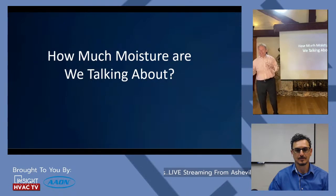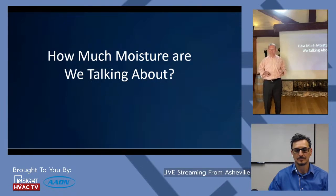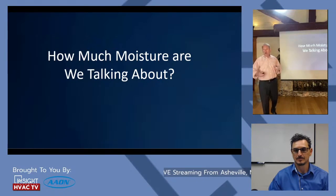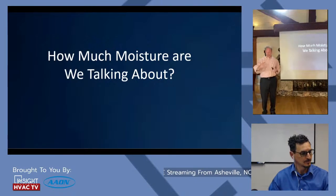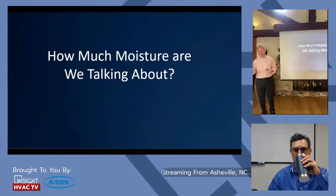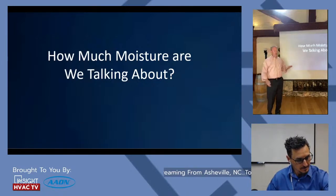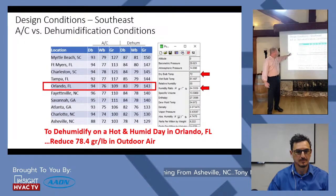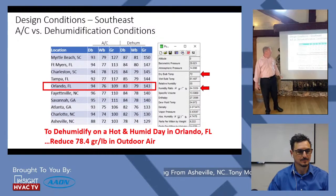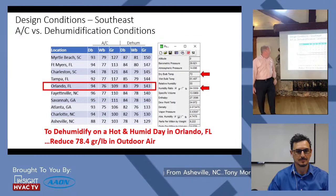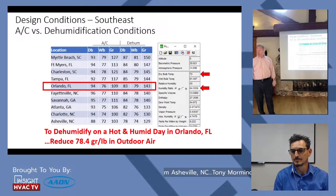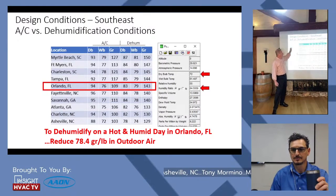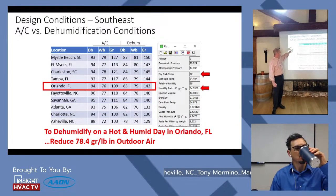How much moisture are we actually dealing with in DX systems? A typical DX system has some return air and some outside air in most commercial applications. In Orlando, the air conditioning design condition is 94°F dry bulb at 76°F wet bulb — 109 grains. But the dehumidification design condition is 83°F at 143 grains. Myrtle Beach, North Carolina actually has the highest grain loading, beating out Fort Myers, Tampa, and Orlando.